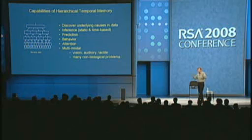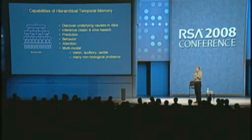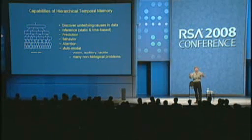Let me remind you what this stuff does. You build these hierarchies and train them on data through some sort of sensory organ — it could be vision or just financial data. The system trains and discovers the underlying causes of the patterns coming from the sensory data.